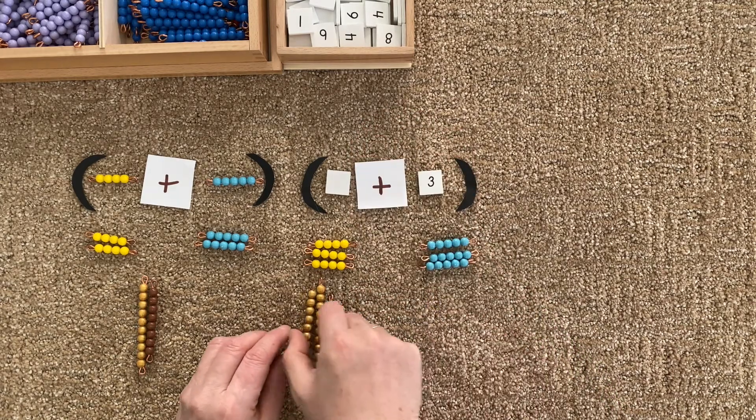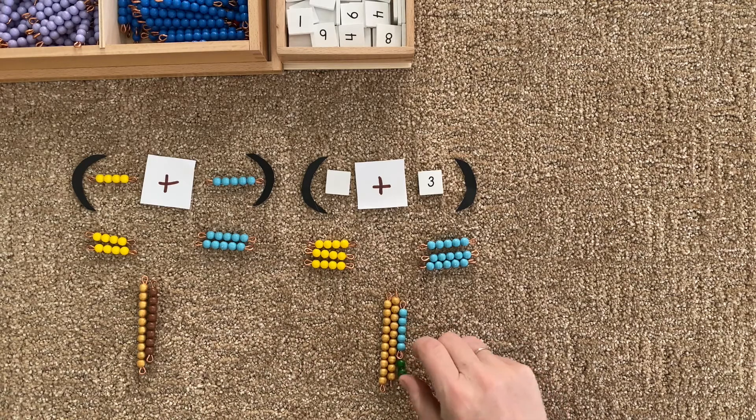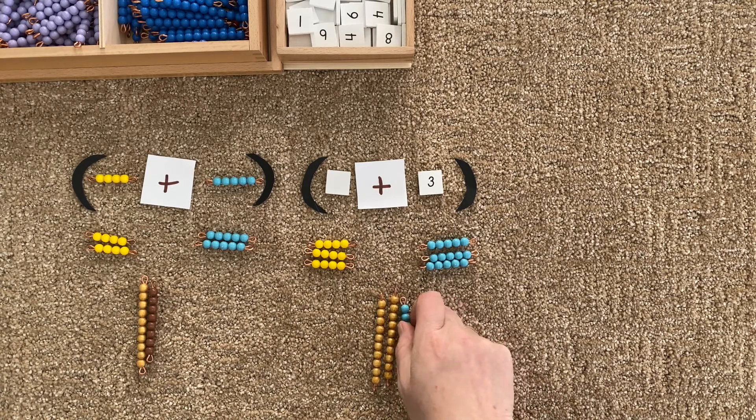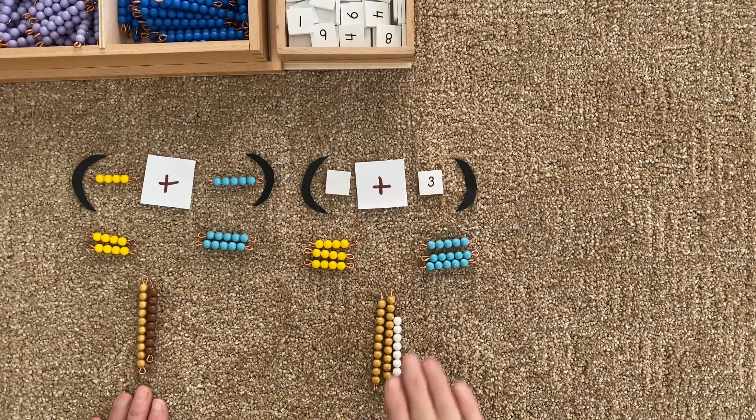Let's put these together and exchange this five and this two for a seven. So now we have these values for these two sums.